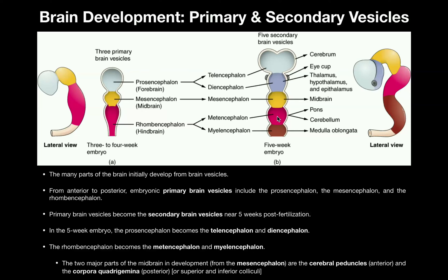The metencephalon is going to develop into the pons and the cerebellum, both of which are caudal or inferior to the midbrain. Remember, the pons is just part of the brainstem. The cerebellum is the structure in the back of the brain that regulates posture, control of movement, fine tuning of movement, and so on.